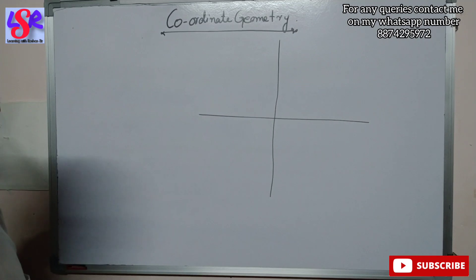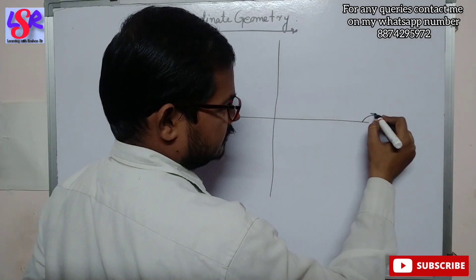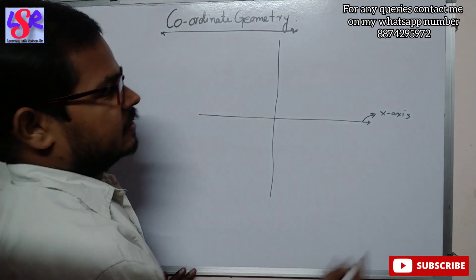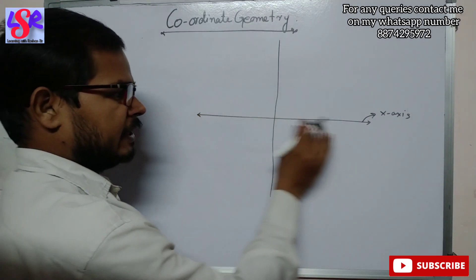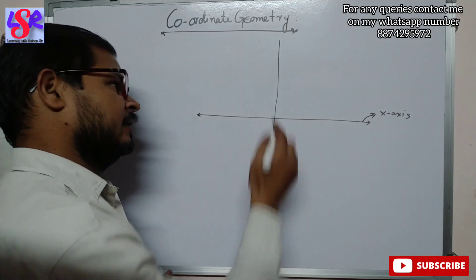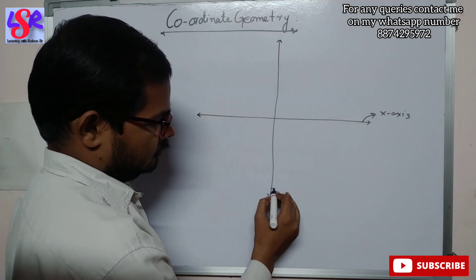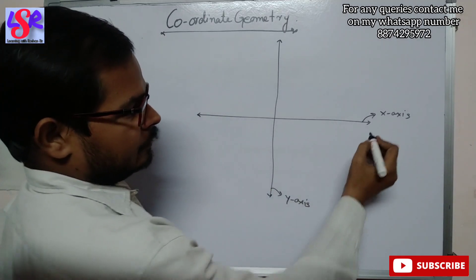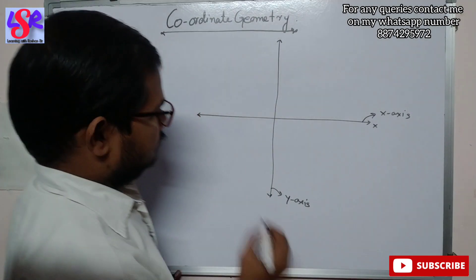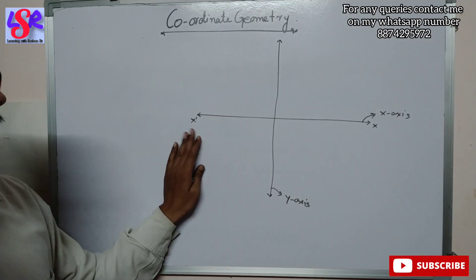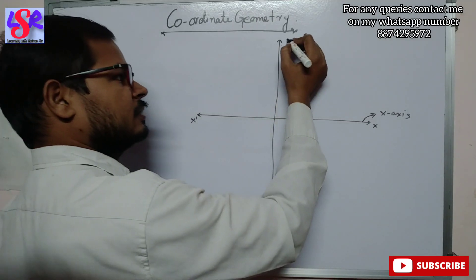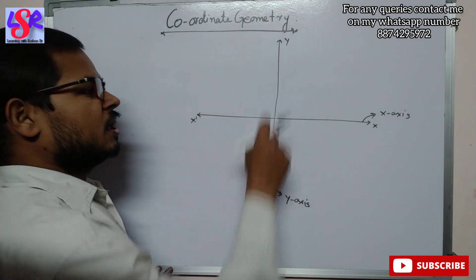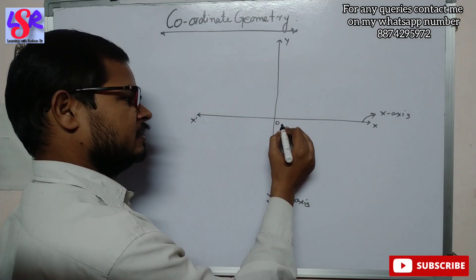Here we can see two mutually perpendicular lines. The horizontal one is known as the x axis, and it can extend further on both sides. The vertical one is your y axis. The positive end of the x axis is labeled x, and the negative end is labeled x dash. The positive end of the y axis goes upward, and the negative end goes downward. Where the two axes meet, that point is known as O, that is the origin.